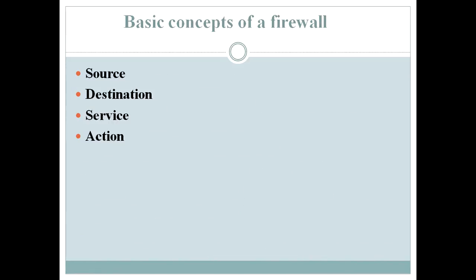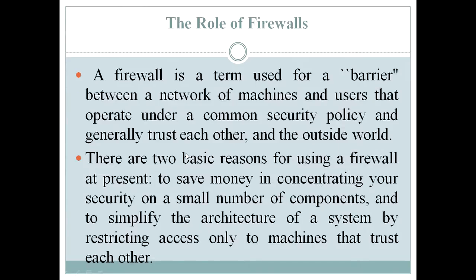The basic concepts of a firewall involve: source, destination, service, and action. The role of a firewall is that it acts as a barrier between a network and machines and users that operate under a common security policy and generally trust each other but not the outside world. There are two basic reasons for using a firewall: to concentrate security on a small number of components, and to simplify system architecture by restricting access only at the gates.